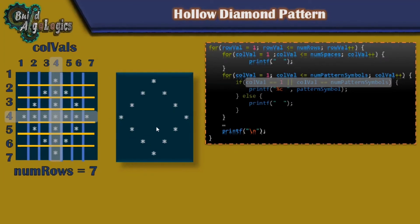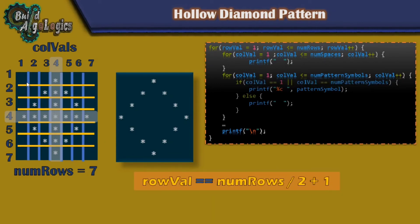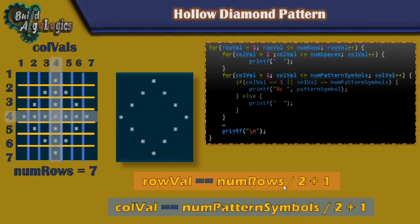For the hollow diamond with cross, this pattern is also very similar — we need both previous conditions plus new ones to print the cross line. The cross line is at row number equal to numbers divided by 2 plus 1. Similarly, the column condition for the cross is num_pattern_symbols divided by 2 plus 1. So we've found our two extra conditions to print this pattern symbol.